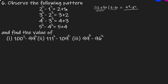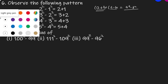कहने का मतलब कि pattern बस यही है: difference of squares of two natural numbers is equal to sum of those two natural numbers. Means 3 square minus 2 square is equal to 3 plus 2; 4 square minus 3 square is equal to 4 plus 3; 5 square minus 4 square is equal to 5 plus 4. यहां भी हमें वही काम करना है जो यहां पर किया है। चलिए solve करते हैं।